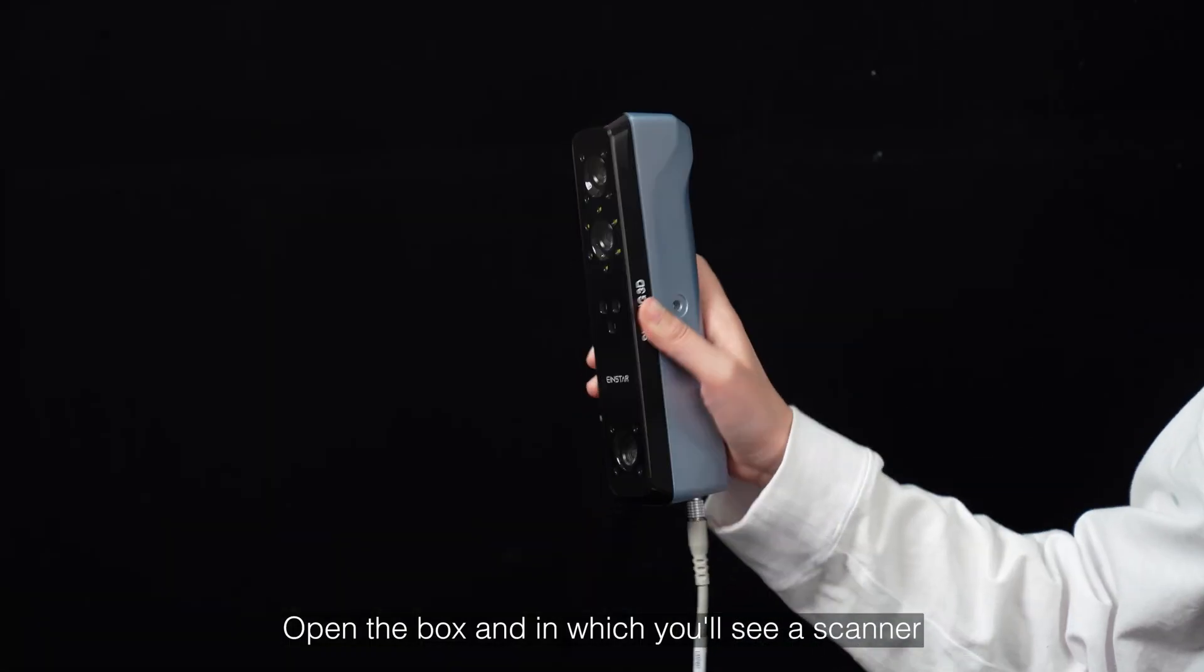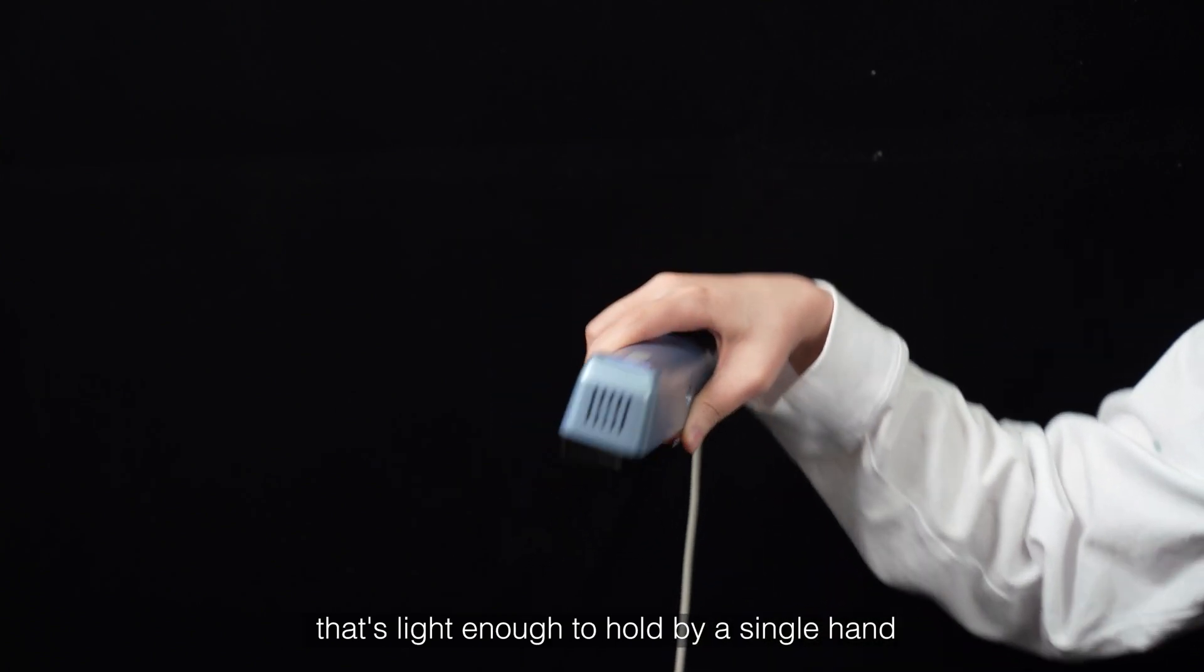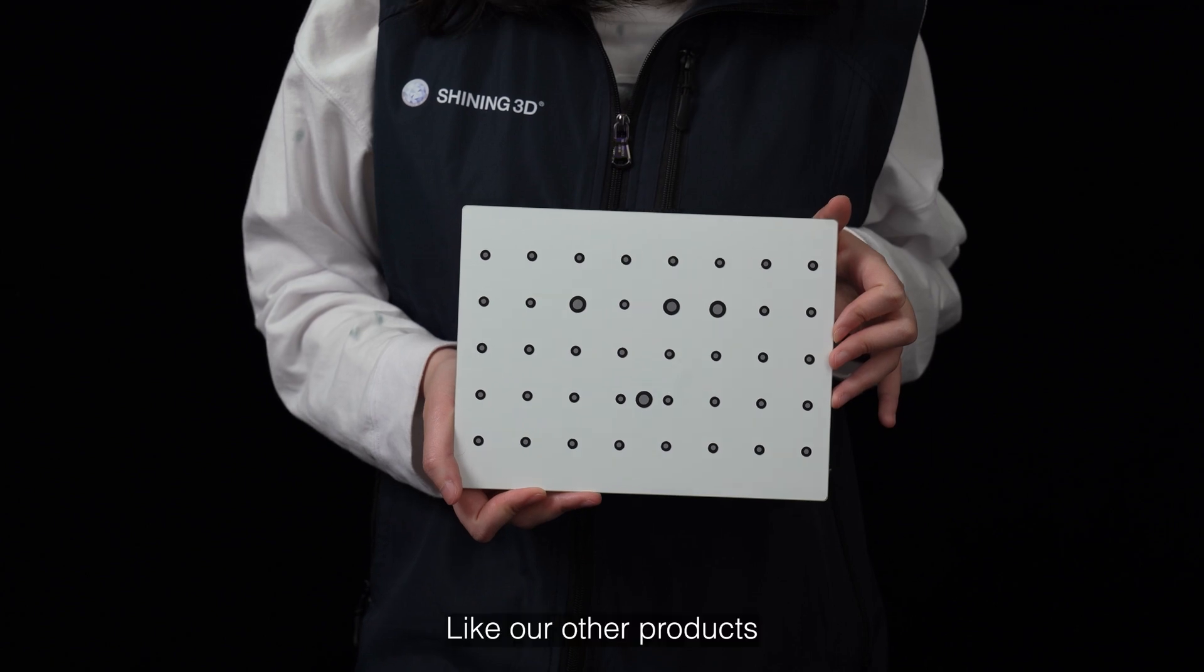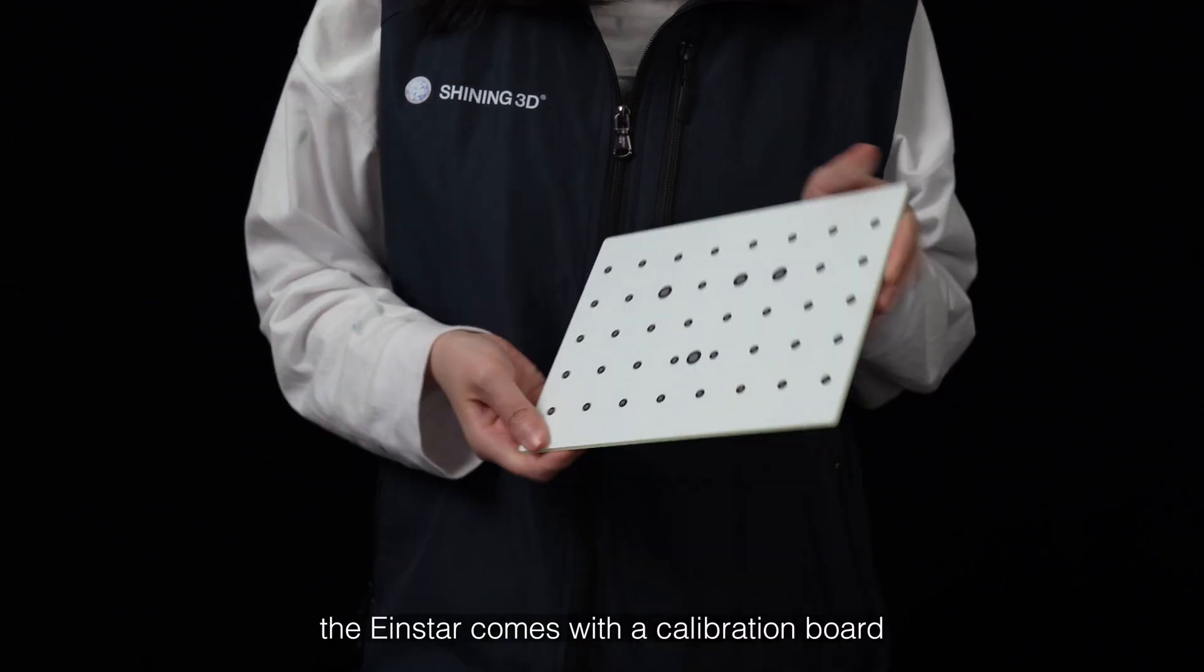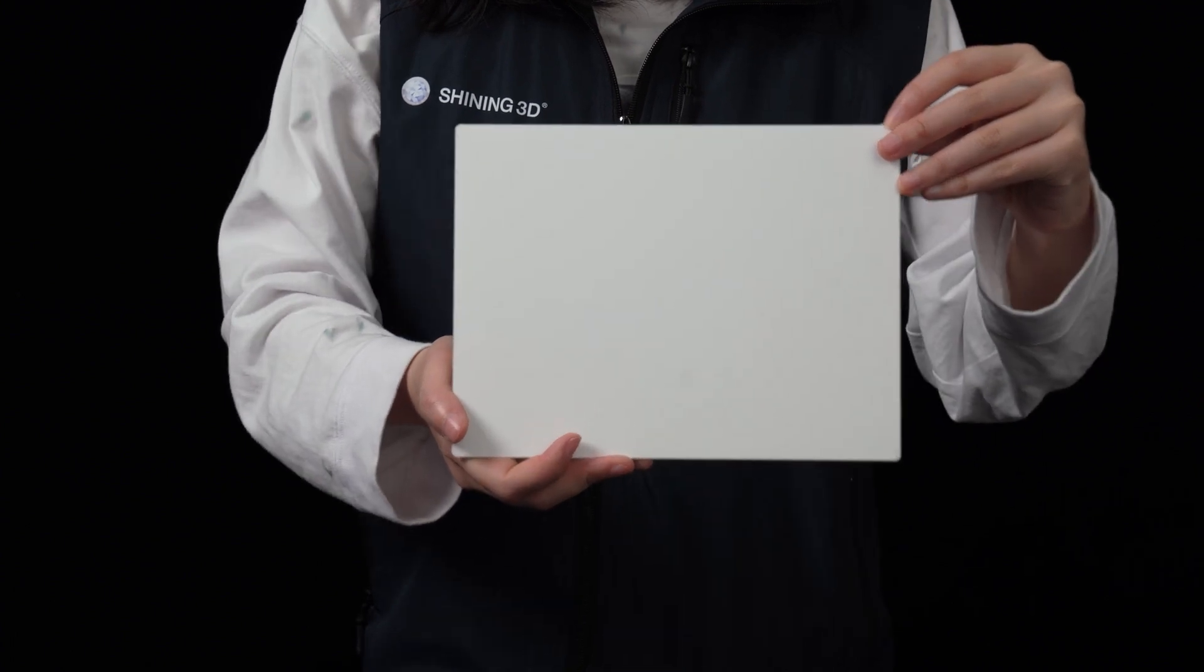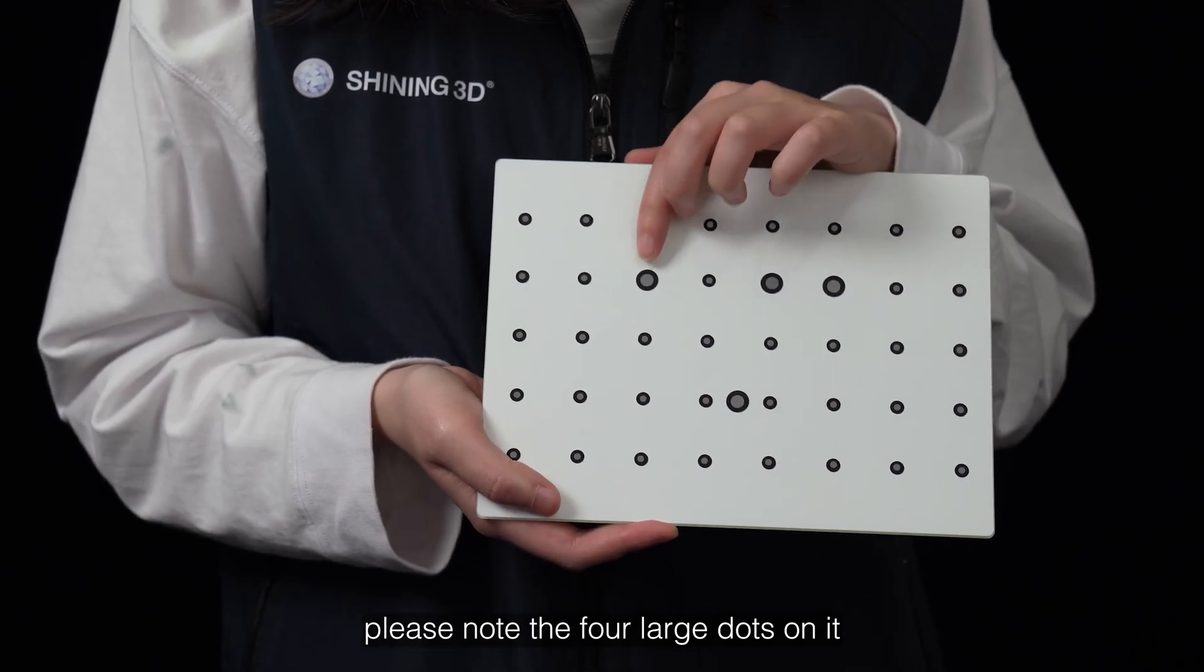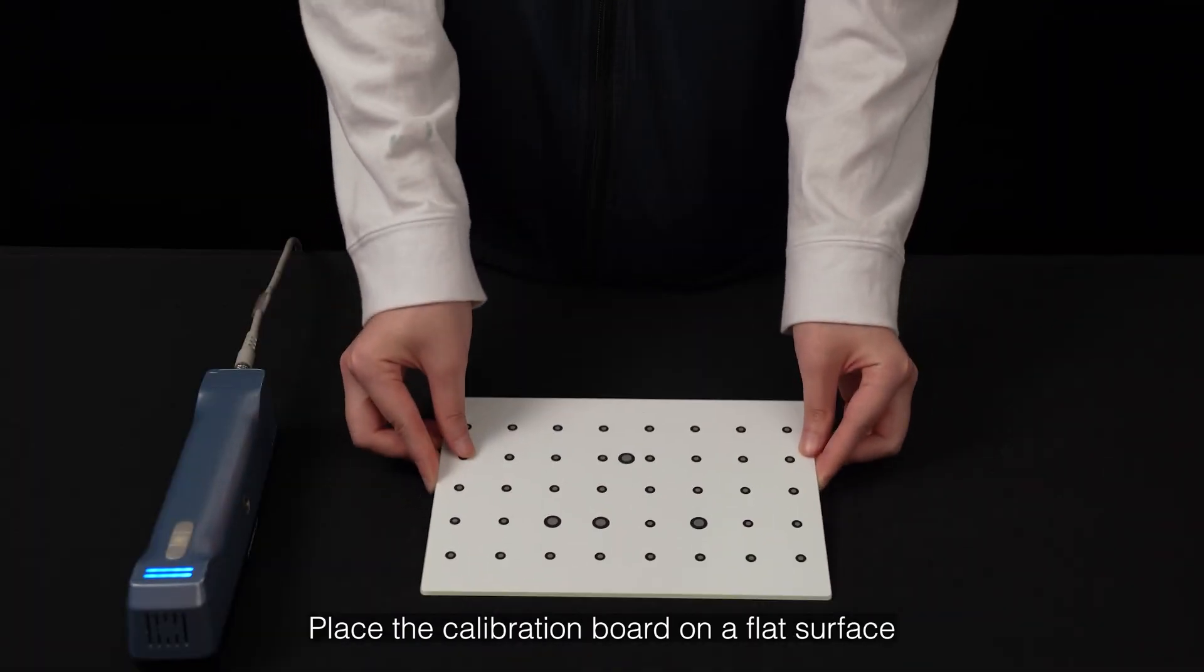Open the box and you'll see a scanner that's light enough to hold by a single hand. Like our other products, the Ion Star comes with a calibration board. Please note the four large dots on it and place it appropriately.